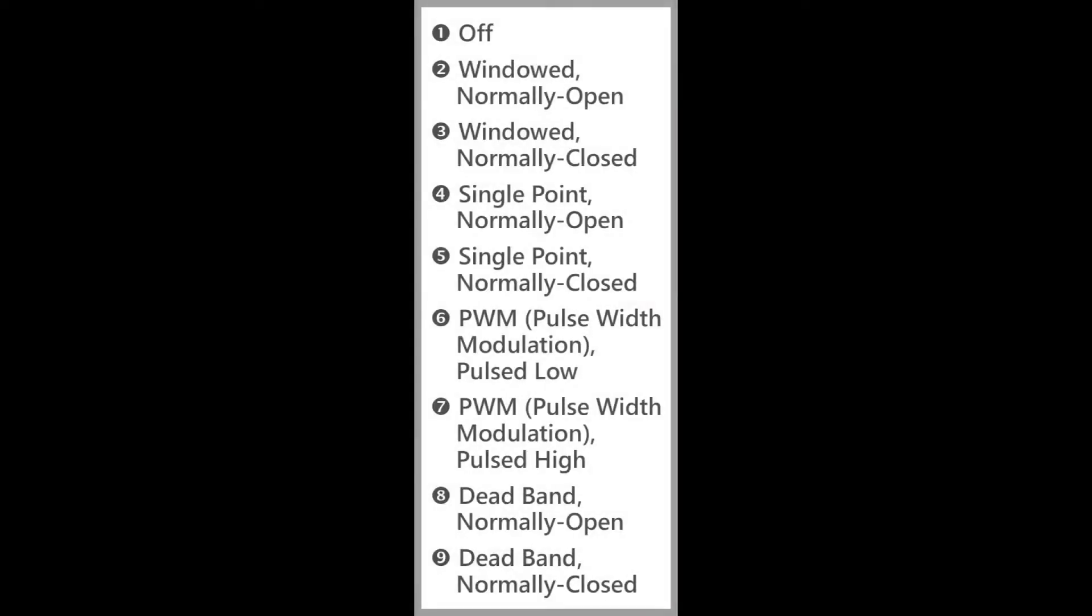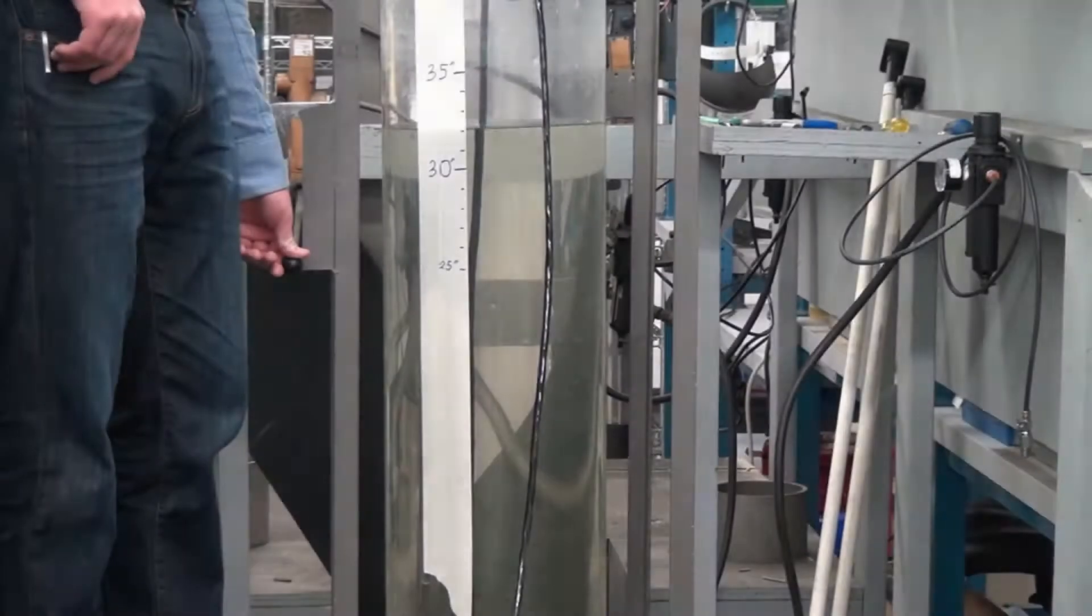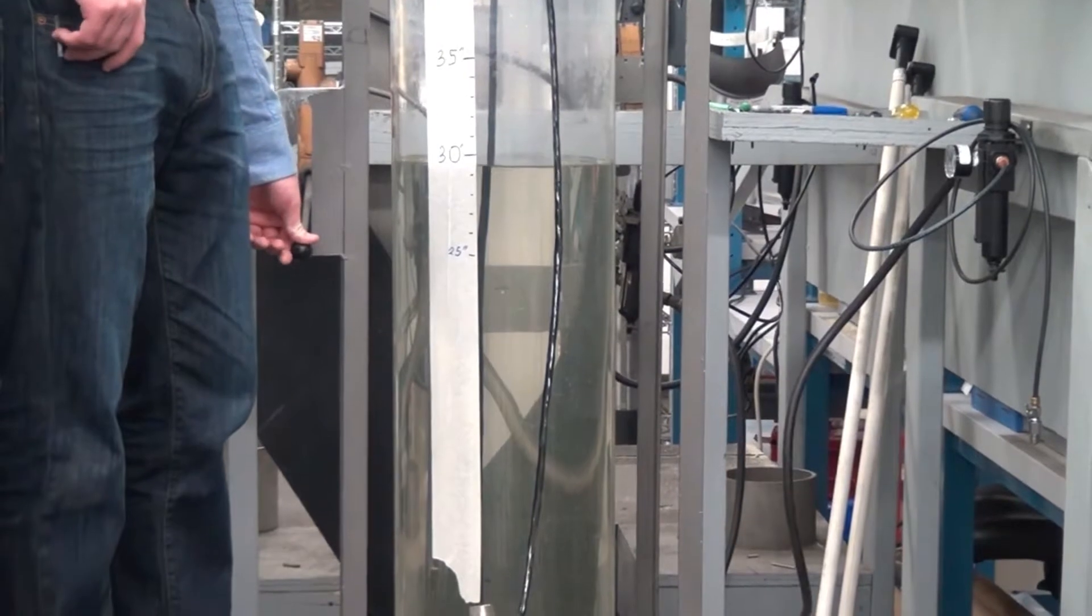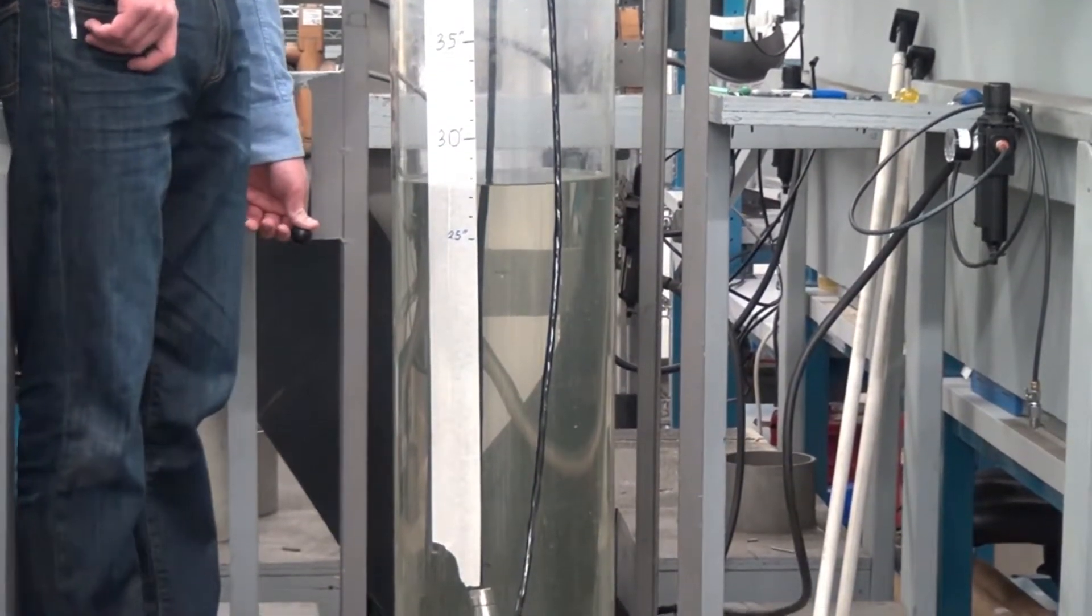Also built into the 815LT is a switch output. The switch output gives you a built-in switch to either control the level or monitor the level by sending an alarm if the level gets too high or too low.